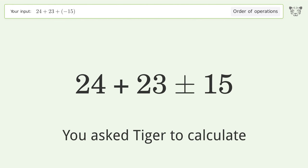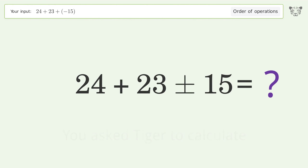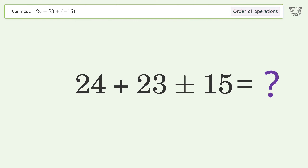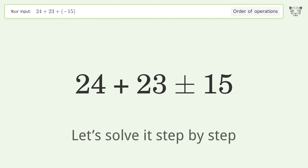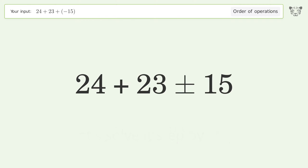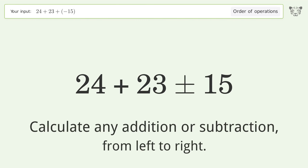You asked Tiger to calculate this. It deals with the order of operations — the final result is 32. Let's solve it step by step.